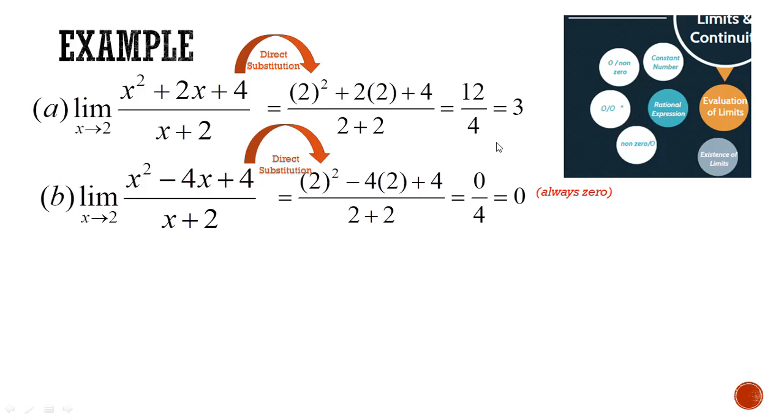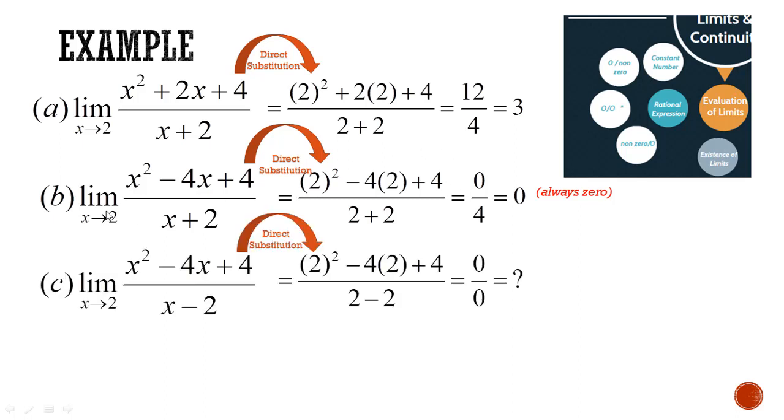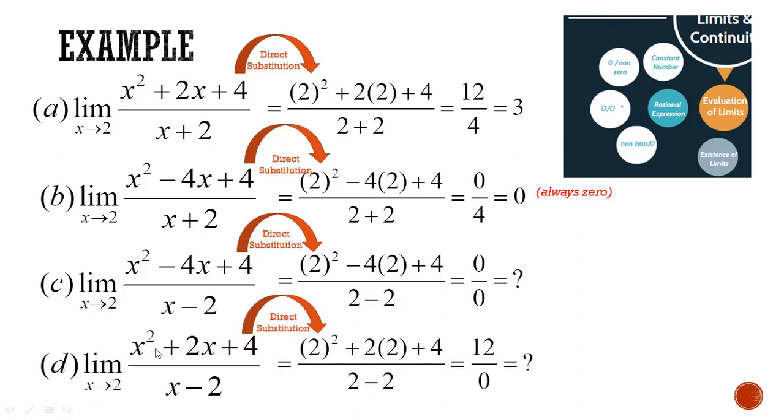How about the other two cases? The example C and D will show you the example when it's 0 over 0. The denominator is 0, that's a 0 factor. And example D is also a denominator with 0, the only different part is the numerator is a constant number.